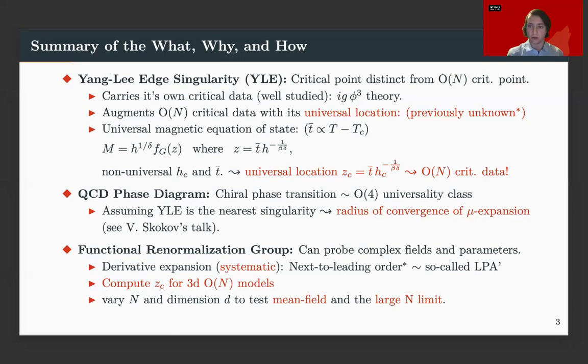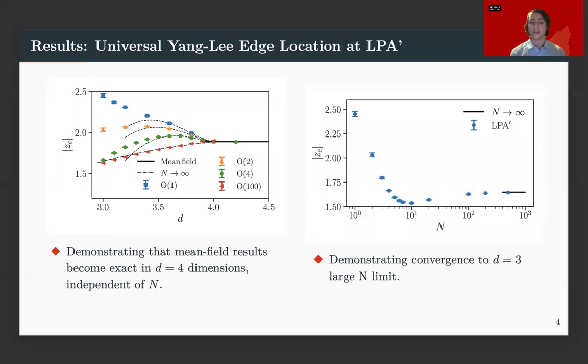So off to our results. So on the left, I have zc versus d for different O(N) models. So I have Ising in blue, O(2) in orange, O(4) in green, and a large N limit in red, O(100). So we see that they all have distinct 3D values, and they all converge to their mean field limit as they should. But there is an interesting behavior in the way that they converge to this mean field limit.